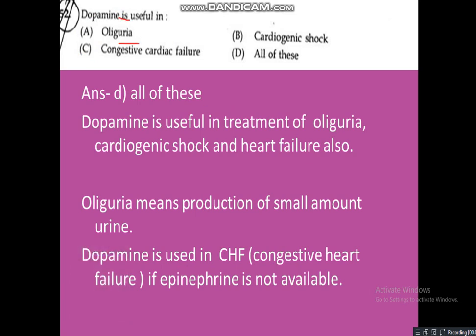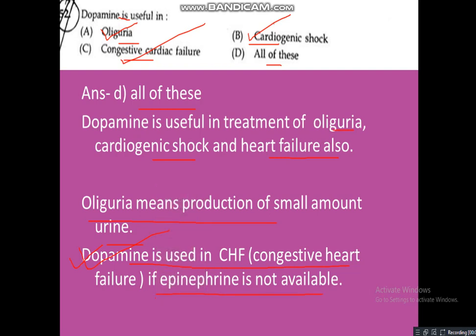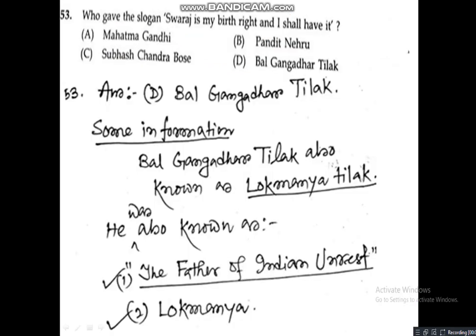Question 52: Dopamine is used in — Option A: oliguria, Option B: cardiogenic shock, Option C: congestive cardiac failure, Option D: all of these. Answer is Option D — all of these. Oliguria means production of a small amount of urine. Dopamine is used in oliguria, cardiogenic shock, and congestive cardiac failure. One important point: dopamine is used in congestive heart failure only if epinephrine is not available.